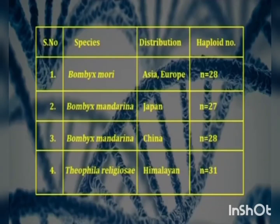From the table: Bombyx mori, distributed in Asia and Europe, has a haploid chromosome number of 28. Bombyx mandarina from Japan has 27, while Bombyx mandarina from China has 28. Theophila religiosa from the Himalayan region has a haploid chromosome number of 31. The chromosomes of mulberry silkworm are very small in size, forming a graded series, and are holocentric in nature.